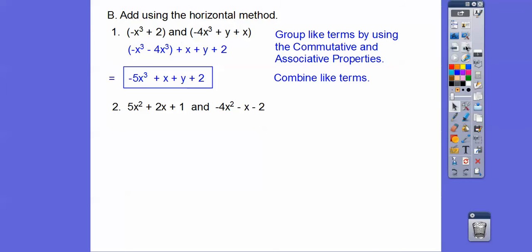Easy. All right, let's try it with this guy here. So we're going to group the x squareds together, the 5x squared and the minus 4x squared. And then we'll group this together, the 2x plus this negative 1x. And then this 1 plus minus 2, or 1 minus 2.